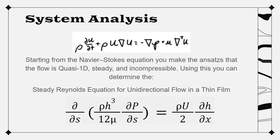With this laminar flow and assuming the flow is also steady and incompressible, you can simplify the Navier-Stokes equation to the two terms on the right-hand side of the equal sign. This allows us to get the Reynolds steady equation for unidirectional flow in a thin film.